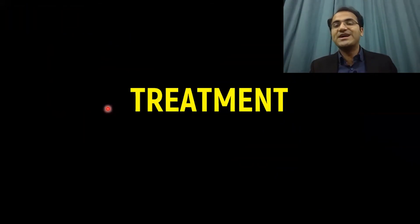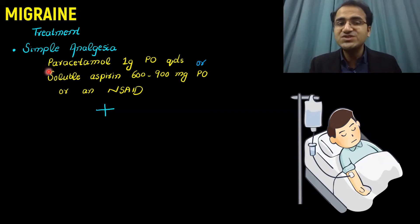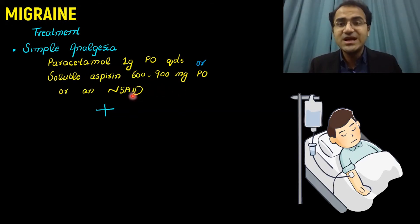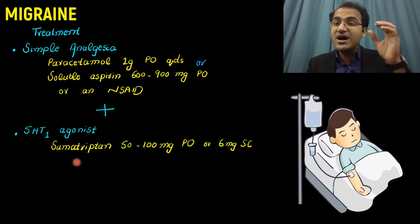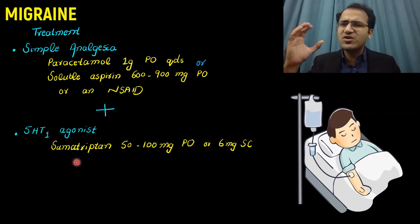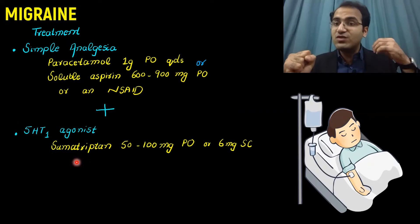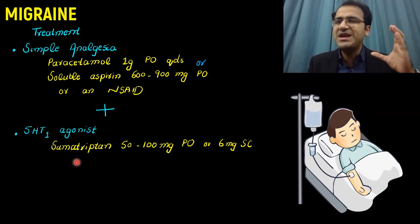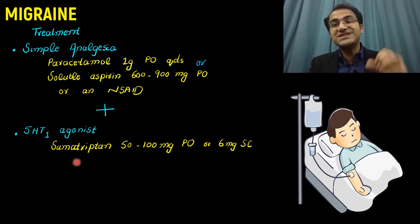Coming to the treatment of migraine headache: if a patient presents to you in the emergency department with migraine headache, you need to give simple analgesia — paracetamol 1 gram orally, or soluble aspirin 600 to 900 mg orally, or any NSAID. In combination with simple analgesia, you need to give a 5-HT1 agonist. 5-HT1 agonists include sumatriptans, which cause vasoconstriction of the vessels. Since vasodilation of the vessels causes throbbing pain in migraine, sumatriptans cause vasoconstriction and abort the headache.